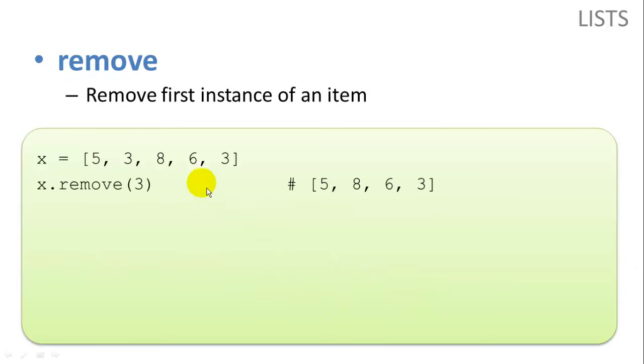Remove is going to remove a specific instance of an item. So if we want to remove a 3 from this list, we can put x.remove3 and it will remove the first 3 that it finds. Not every 3, just the first 3. So you can see here the first 3 is gone. And reverse reverses the current order of the list. So the number that is first will become the last. The number that is last is going to become first and so on.